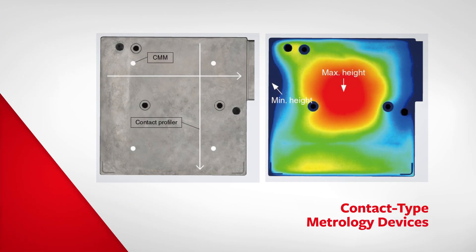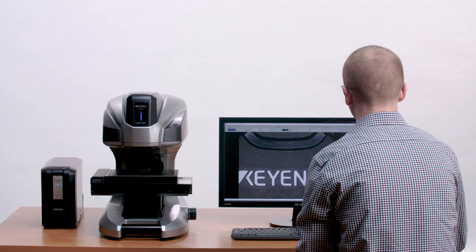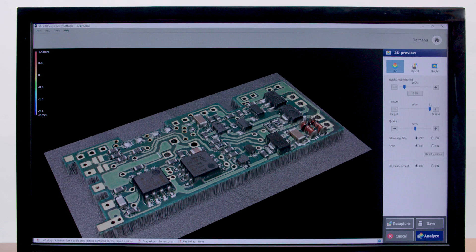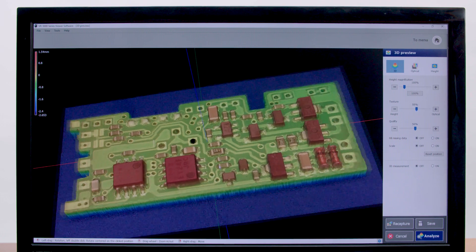Traditional contact type metrology devices, such as profilers or CMMs, are limited to acquiring point or line data. By employing a structured light pattern, the VR can automatically measure a part with just the click of a button. A dense data set is gathered, allowing the user to understand their parts in greater detail.